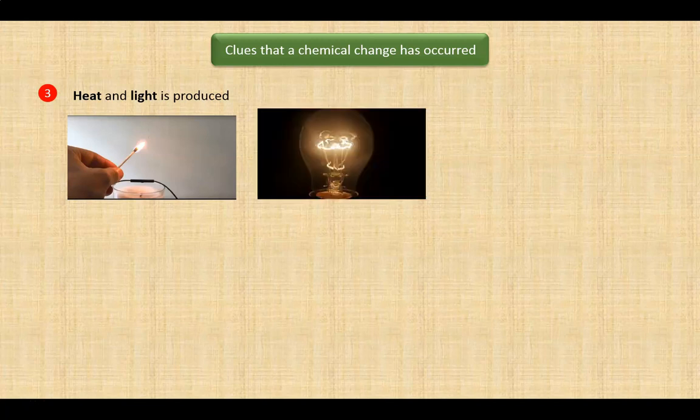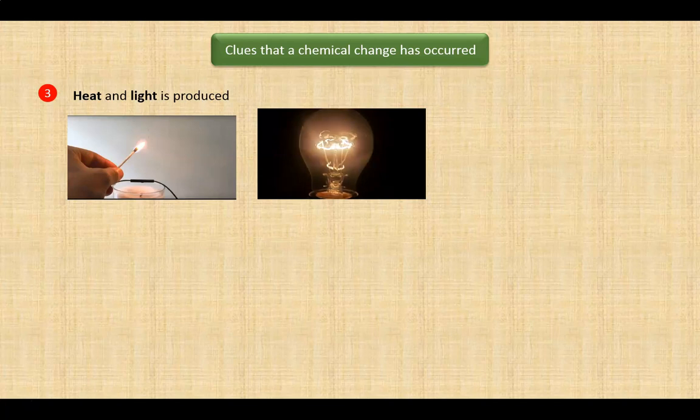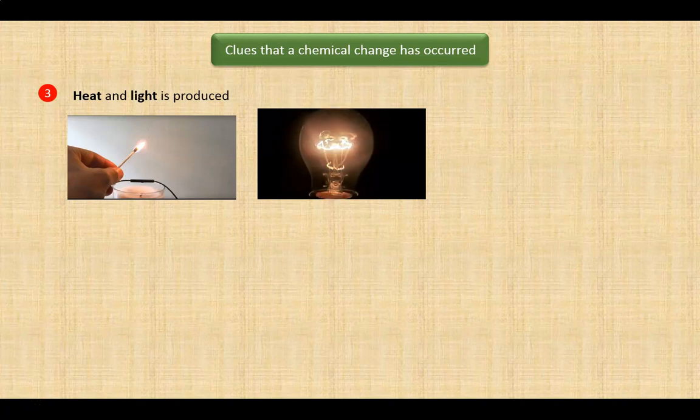Now, let's consider a burning light bulb. Of course, it's not burning in the same sense as a match, but that's how we often talk about light bulbs. Heat and light are being produced. Does this mean a chemical change is taking place? We need to consider whether any new substance is being produced. When the light bulb is turned off, the heat and light are gone, and we are left with the same tungsten filament that we began with. Since no new substance has been formed, we have to say that a burning light bulb is not an example of a chemical change.